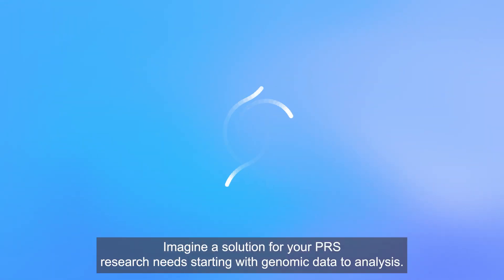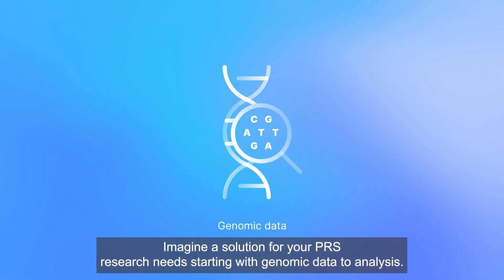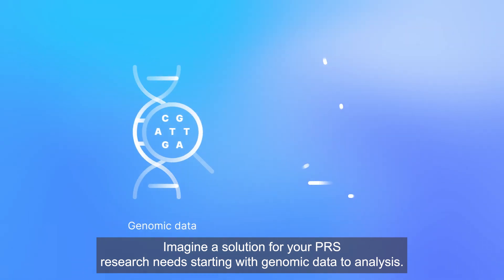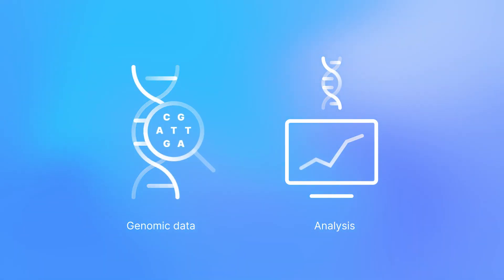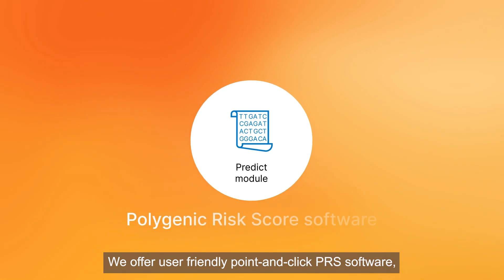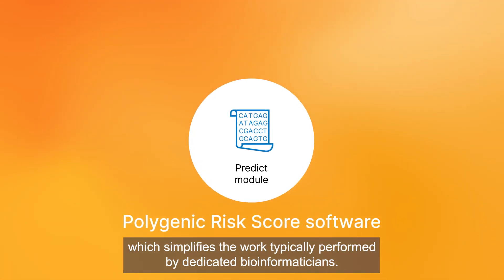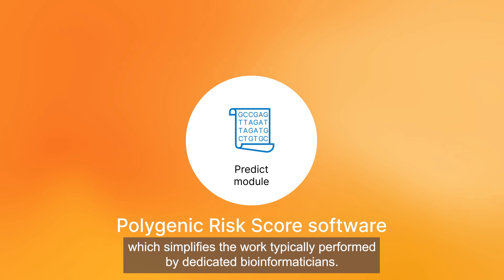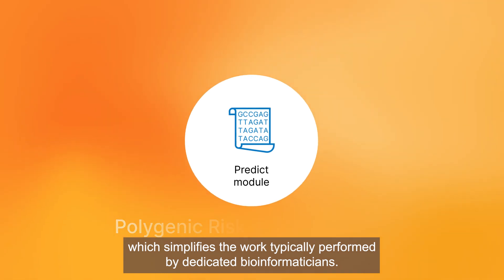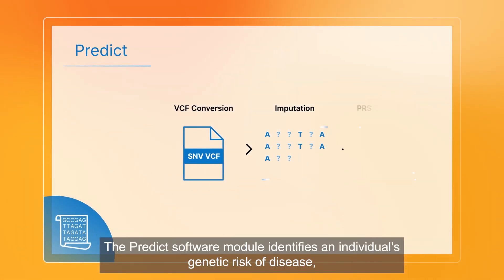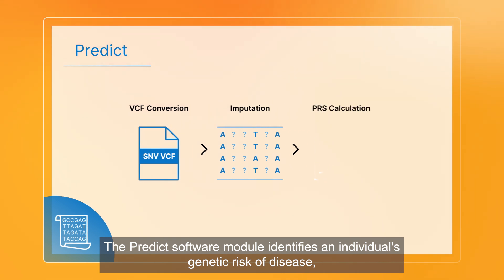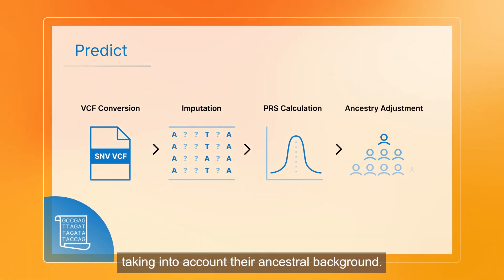Imagine a solution for your PRS research needs starting with genomic data to analysis. We offer user-friendly point-and-click PRS software which simplifies the work typically performed by dedicated bioinformaticians. The PREDICT software module identifies an individual's genetic risk of disease, taking into account their ancestral background.